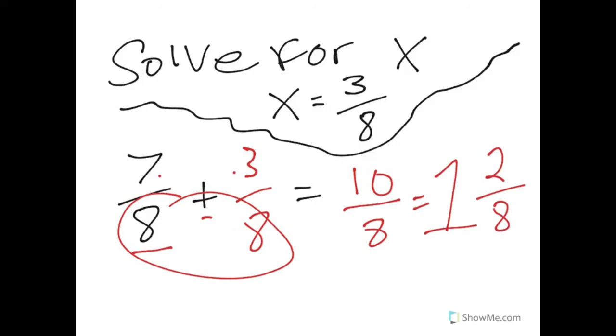We know that 8 goes into 10 one time. There'd be 2 left over, the denominator stays the same, so I know that improper fraction if I converted it would be 1 and 2/8. And then if I simplify that, 2/8 is the same as 1/4. My whole number stays the same, I'd end up with 1 and 1/4.